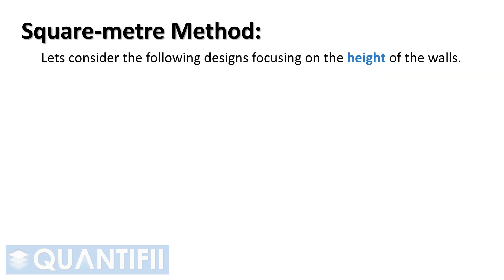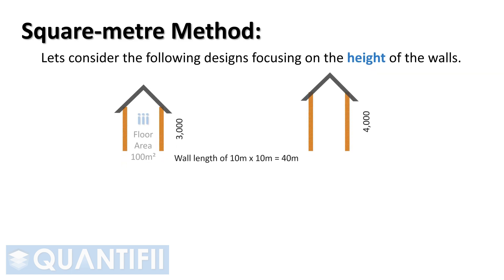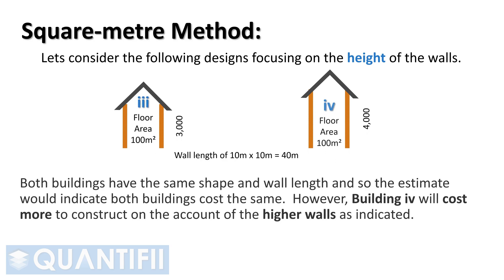Moving on to the following designs focusing on the height of the walls. Both buildings have the same shape and wall length, and so the estimate would indicate both buildings cost the same. However, building four will cost more to construct on account of the higher walls as indicated.